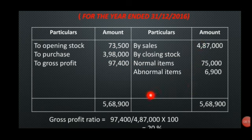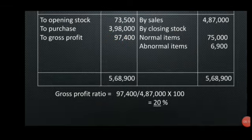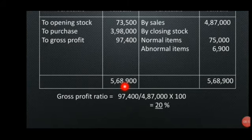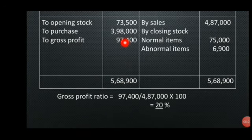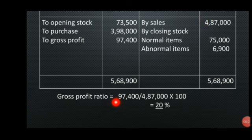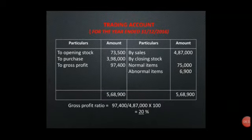What is the gross profit ratio? The formula is: gross profit divided by sales into 100. Gross profit is 97,400 divided by 4,87,000 into 100. The gross profit ratio is 20%.